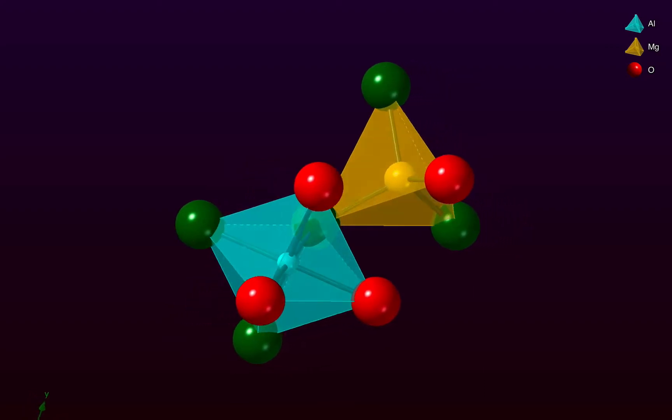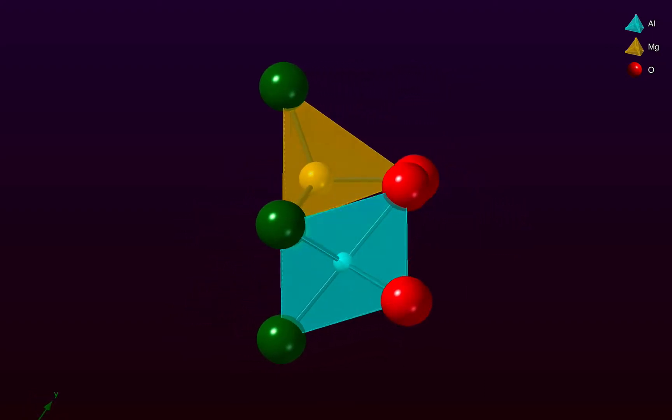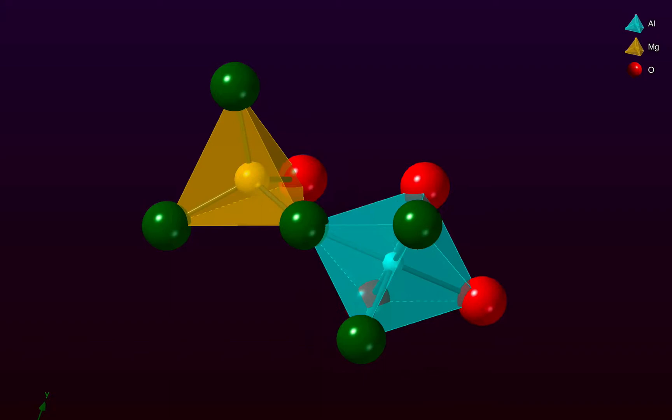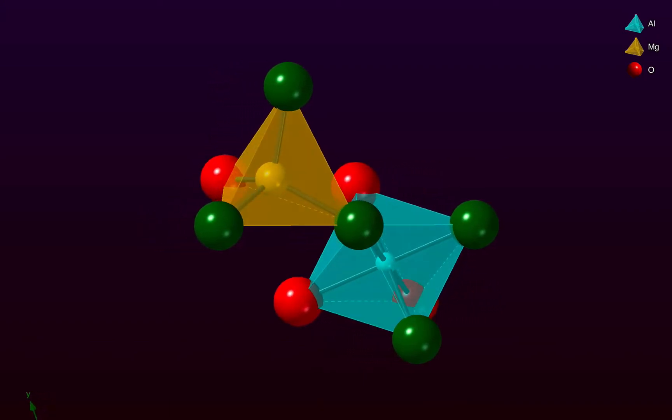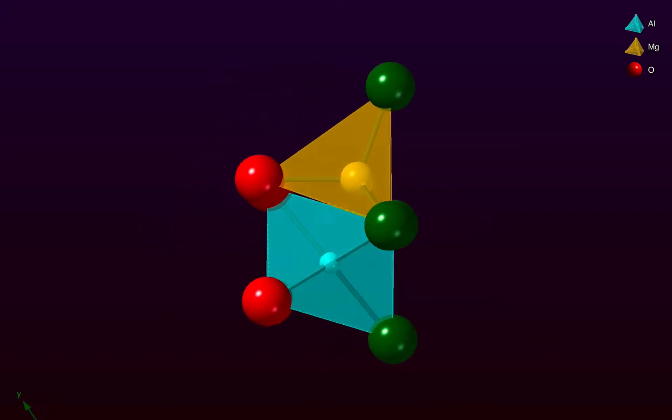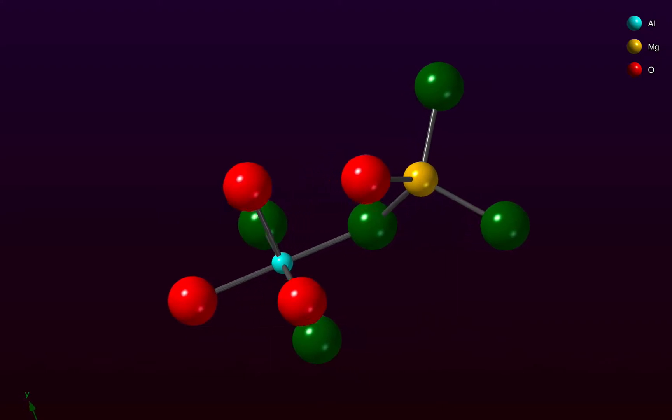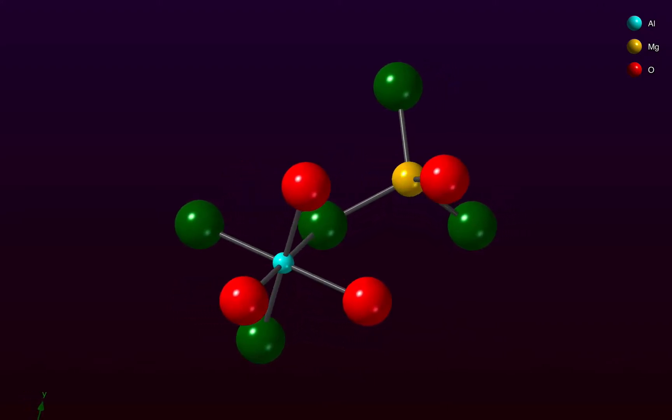We're going to start with the cluster of atoms from the spinel structure that we built in an earlier tutorial. I'm going to switch to a ball and stick plot, and we want to start off by measuring some bond distances.